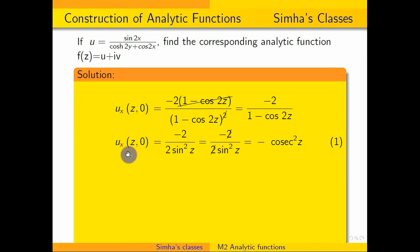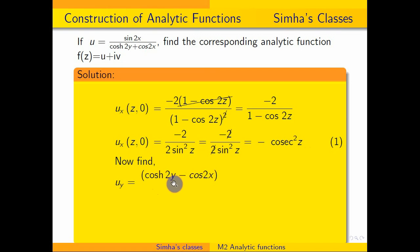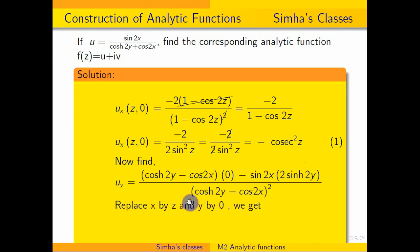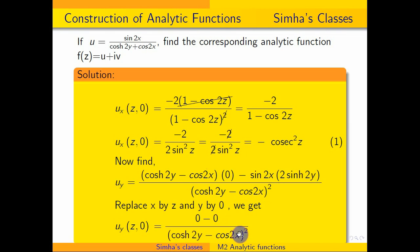Now I am differentiating u partially with respect to y and replacing x by z and y by 0. Applying the quotient rule formula again for the partial derivative with respect to y — the y term is not in the numerator, so the numerator part is 0 minus. Keeping the denominator and differentiating cos 2y gives 2 sin 2y. Now replacing x by z and y by 0: uy(z, 0) equals — the sin h term at 0 is sin(0) = 0 — so the numerator is 0, and the entire term becomes 0.